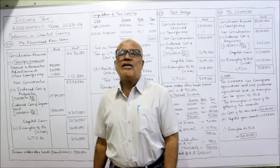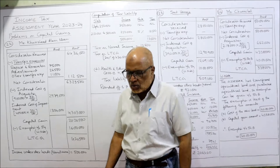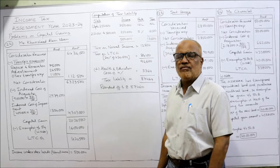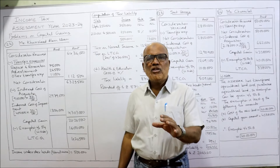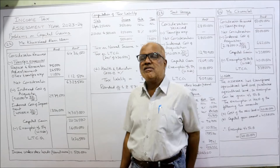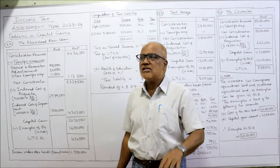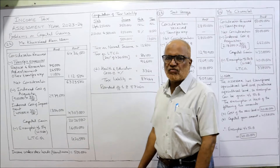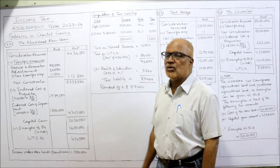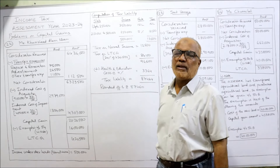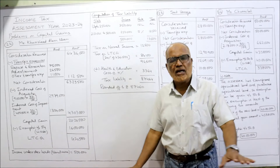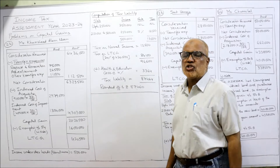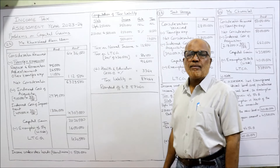First, consideration received: the house was sold for Rs. 64,36,000. Separate transfer expenses are given — repair and renovation Rs. 75,000, advertisement Rs. 26,500, and other transfer expenses Rs. 11,000. Total transfer expenses: Rs. 1,12,500. Deducting these, we get net consideration of Rs. 63,23,500.